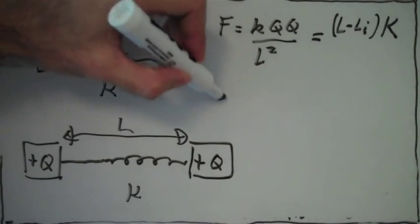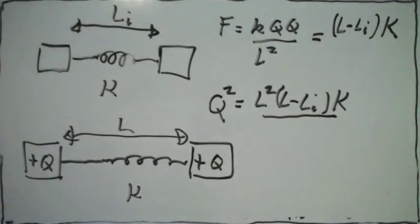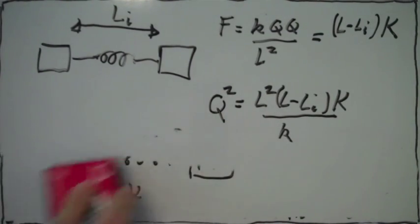From here, we solve for q. q squared is given by this expression, which we get from solving for q. Then we take the square root of this to find what q is.